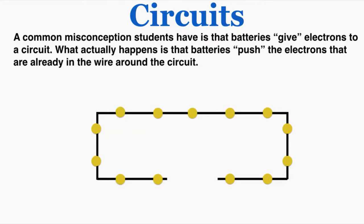A common misconception students have coming into class is that batteries give electrons to a circuit. You may remember that current is actually the movement of electrons, and what students imagine is that the electrons in the current all come from the battery — like the battery contains the electrons and when it's plugged in, those electrons move around the circuit. But what actually happens is that electrons already exist in the metallic material that makes up the circuit, and the battery just pushes the electrons that are already in the wire along the circuit.